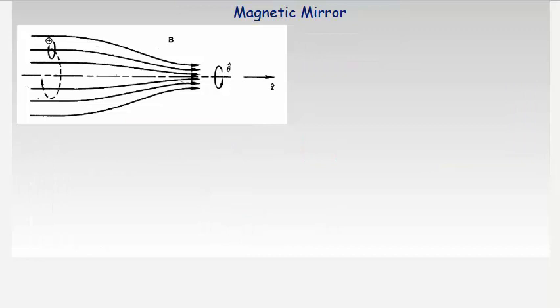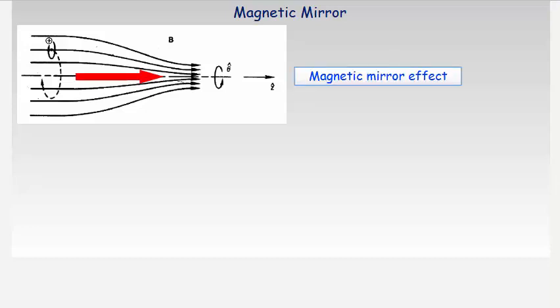It is observed that charged particles can be reflected when traveling from low to high magnetic field regions. This is called the magnetic mirror effect. We will look at the cylindrically symmetric magnetic mirror as shown here, although other symmetries are possible.